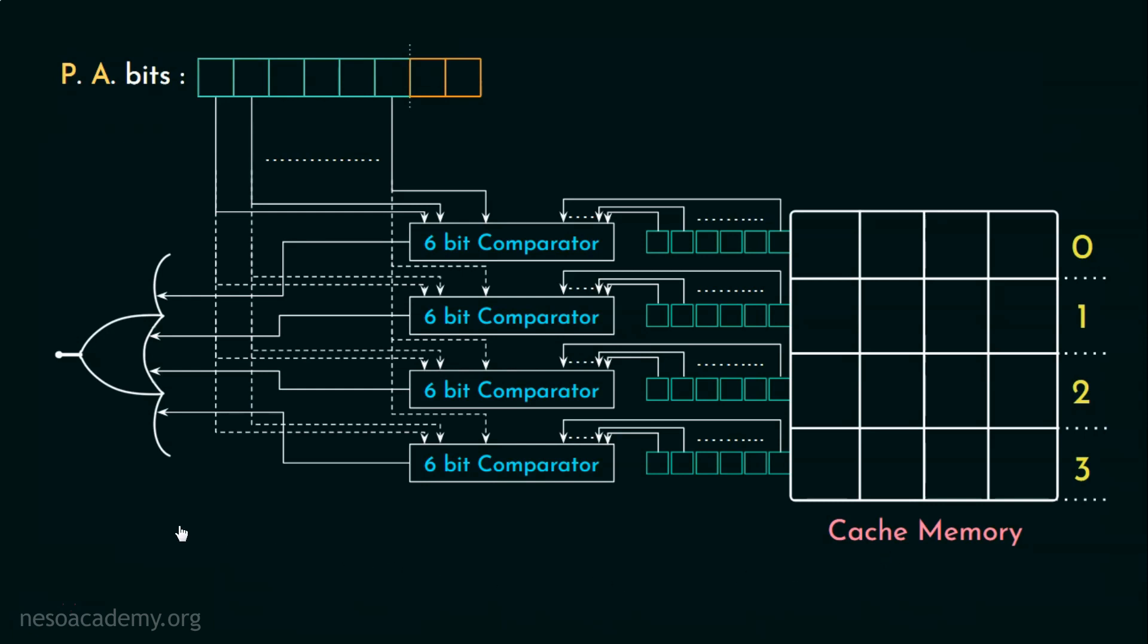Then again, one might argue that why use OR gate? It would be efficient to use XOR gate in this scenario. Well, you were absolutely correct. But the price of a multi-input XOR gate would definitely be more than that of multi-input OR gate and we already spent too much on the comparators, didn't we?